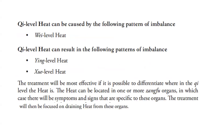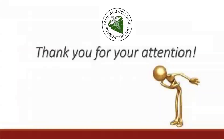Qi level heat can be caused by Wei level heat, and can result in Ying level heat and Xue level heat. The treatment will be most effective if it is possible to differentiate where in the Qi level the heat is. The heat can be located in one or more Zangfu organs, in which case there will be specific symptoms and signs, and treatment will be focused on draining heat from those organs.